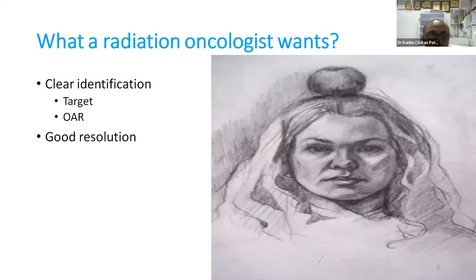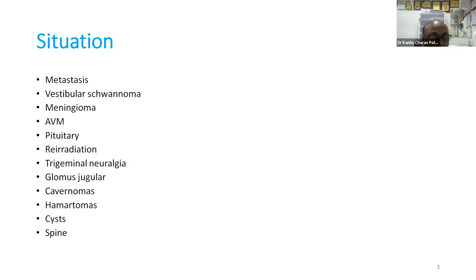As a radiation oncologist, we want clear identification of the target and organ at risk, and we need a good resolution image. This is important because if you take extra tissue there will be side effects, and if you miss some tissue you will have local recurrence. In our practice we encounter metastasis, vestibular schwannoma, meningioma, AVM, pituitary, re-radiation, trigeminal neuralgia, glomus jugulare, cavernoma, hematoma, cyst, and spine cases day by day.